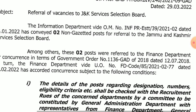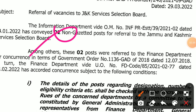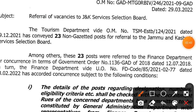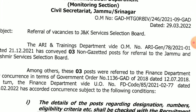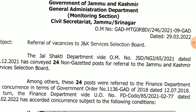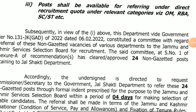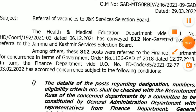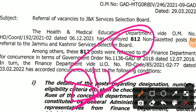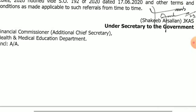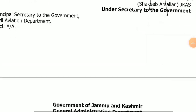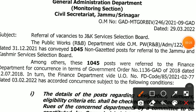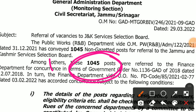Information Department has 2 posts, Tourism Department has 23 posts, ARI and Training Department has 3 posts, Jal Shakti Department has 24 posts, Health and Medical Education Department has 812 posts, Civil Aviation Department has 8 posts, and R&B Public Works Department has 1045 posts — making a total of 1045 posts in that recruitment.